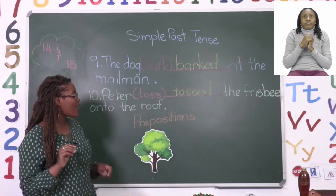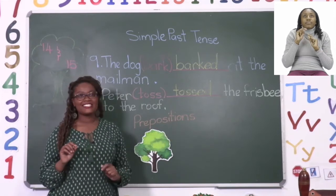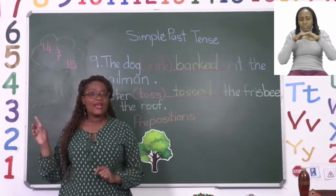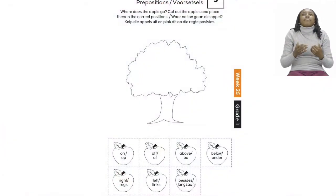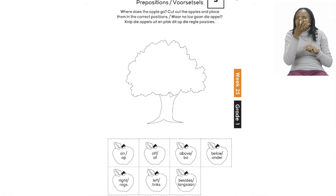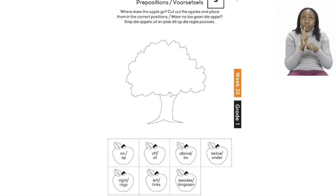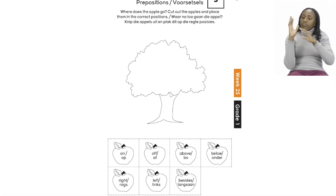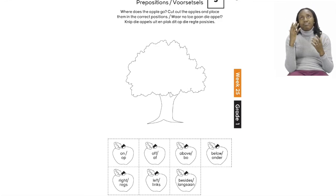After that we have our prepositions on the next page, page 15. On page 15 we have a fun activity with our prepositions. It's going to be our job to cut out the apples and place them in the correct position. We need to do two things: first cut out our apples, and then paste them in the right place. I'm going to help you with only one apple.